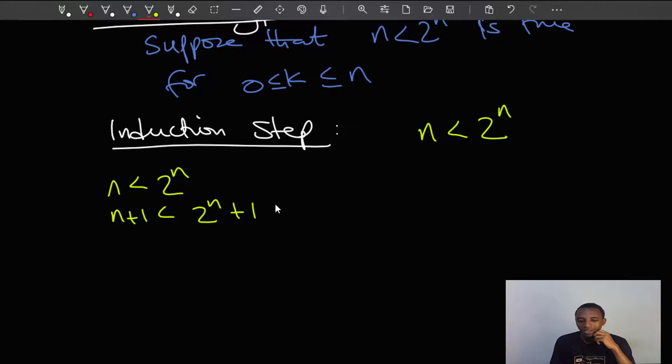But then this right here is less than or equal to 2 to the power n plus n. And this should be true because n is a non-negative integer. So the least value of n here can only be a 1, which means that even with the smallest value of n, this can only be less than or equal to 2 to the power n plus n.